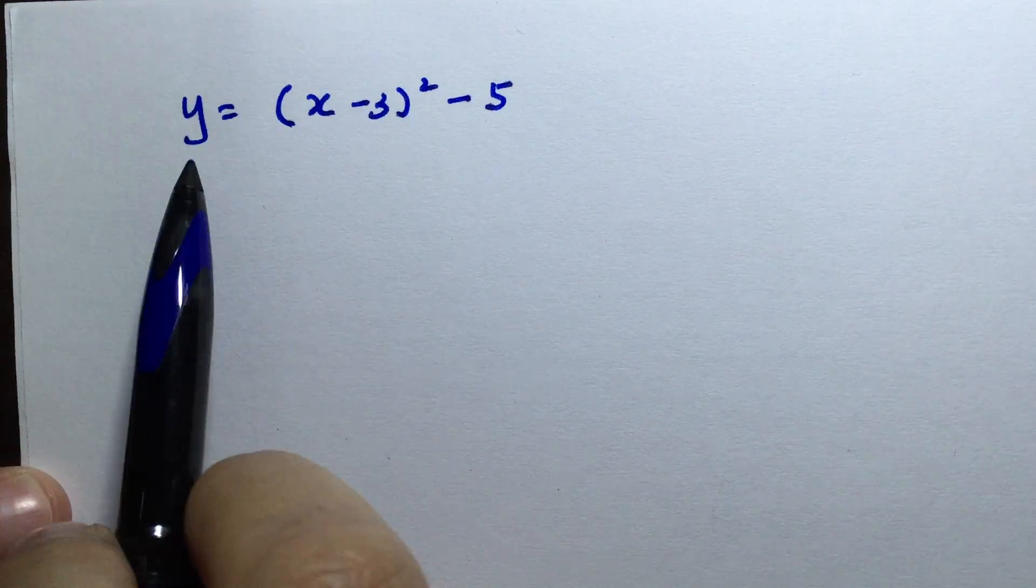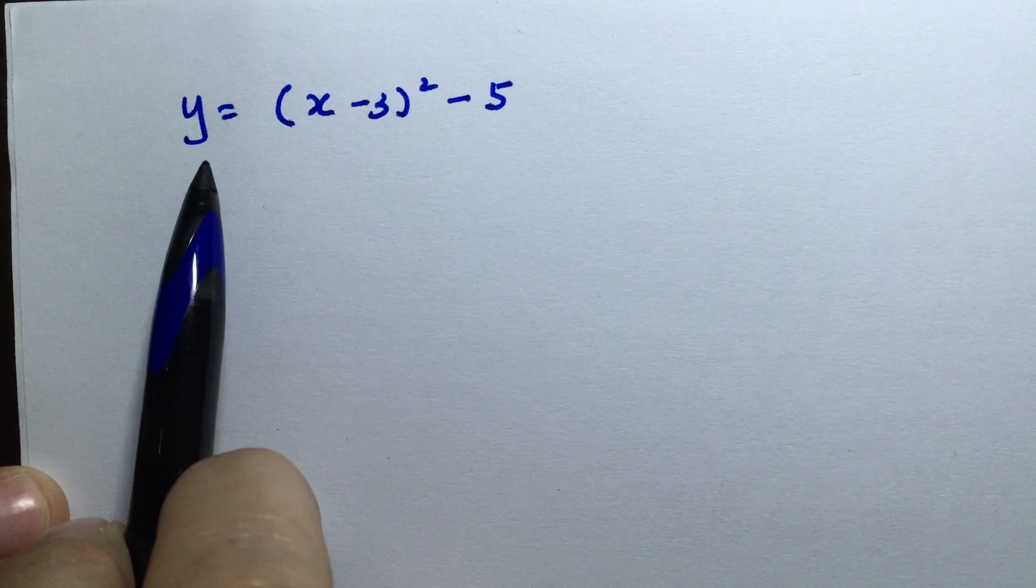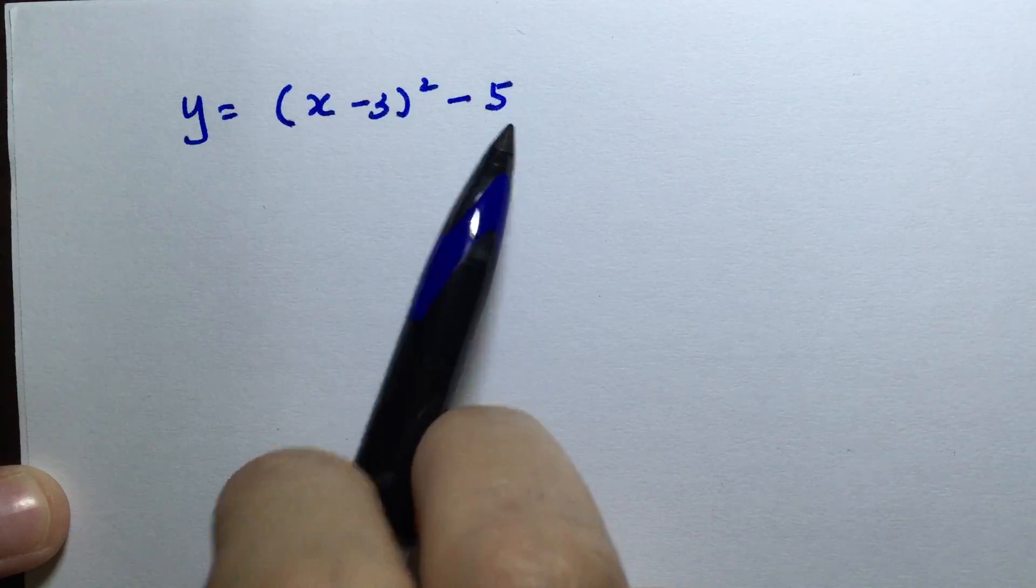Today we're going to sketch a graph of the completed square form. As you can see, this is the completed square form with something squared and something outside there.